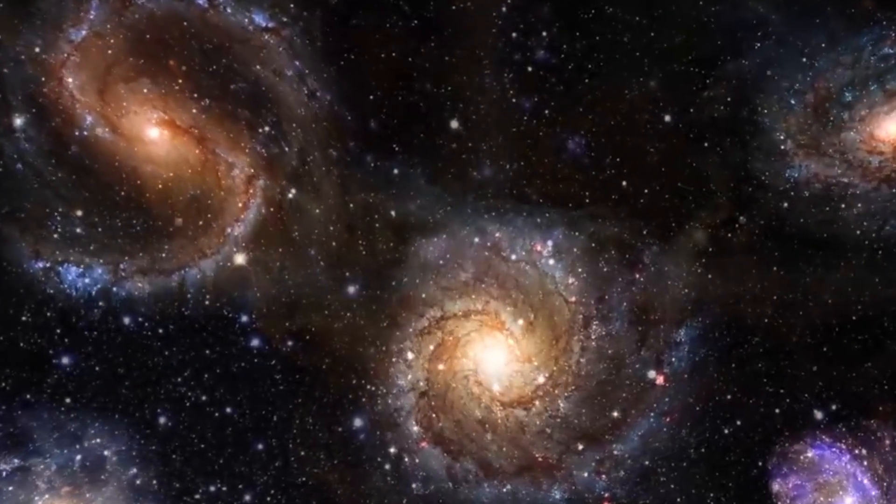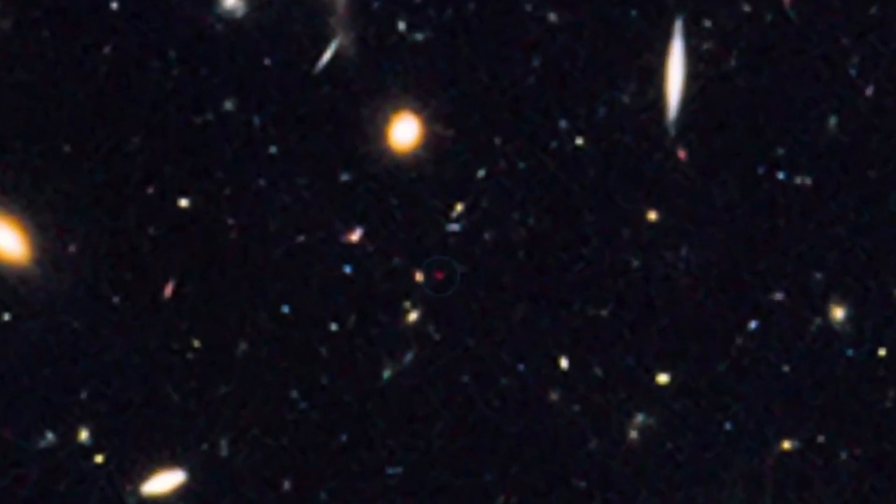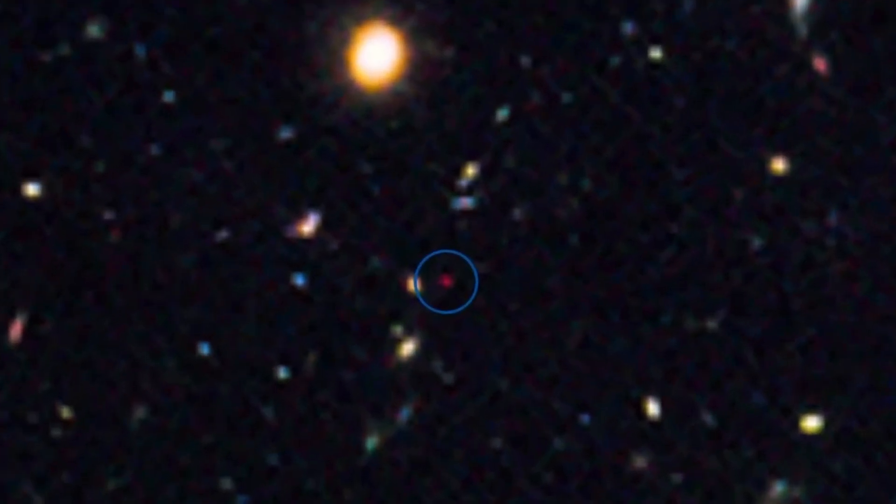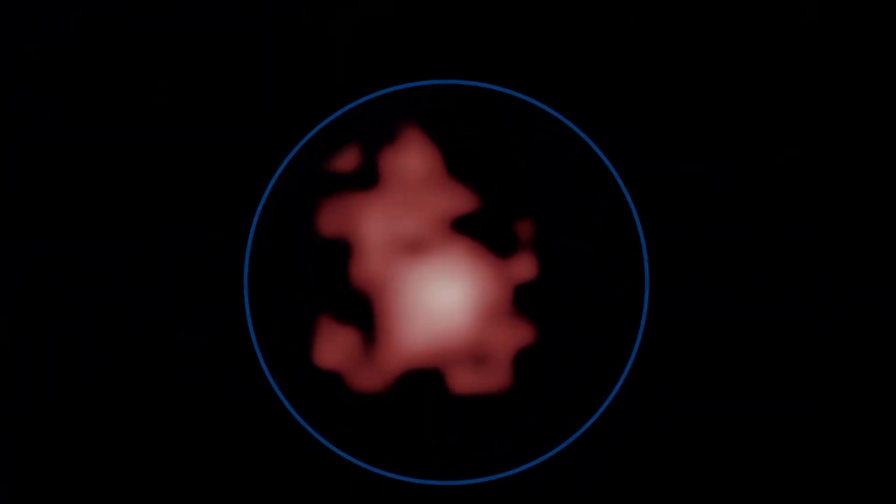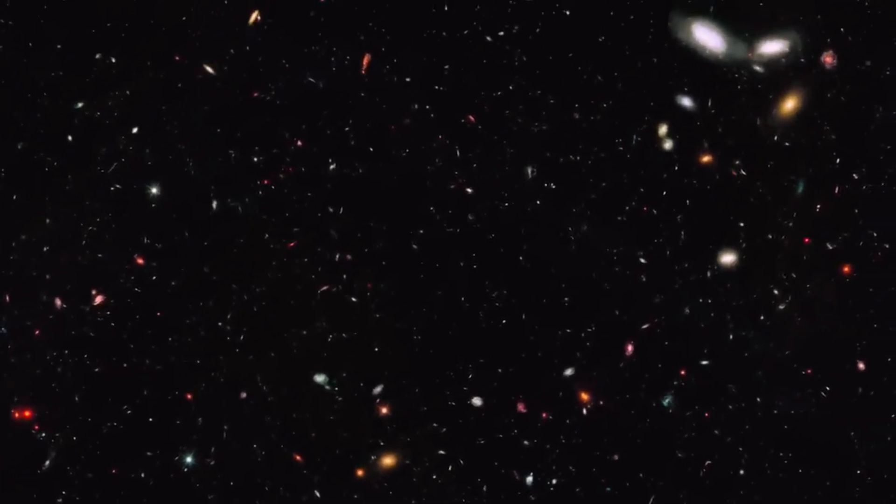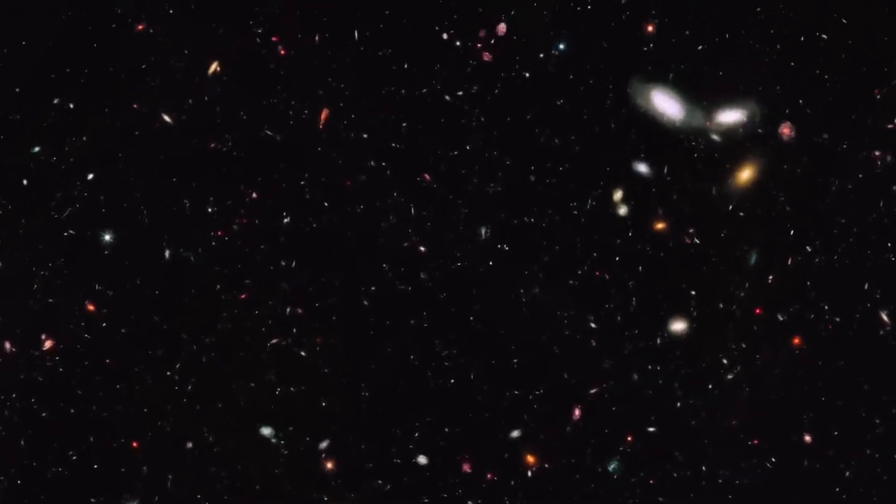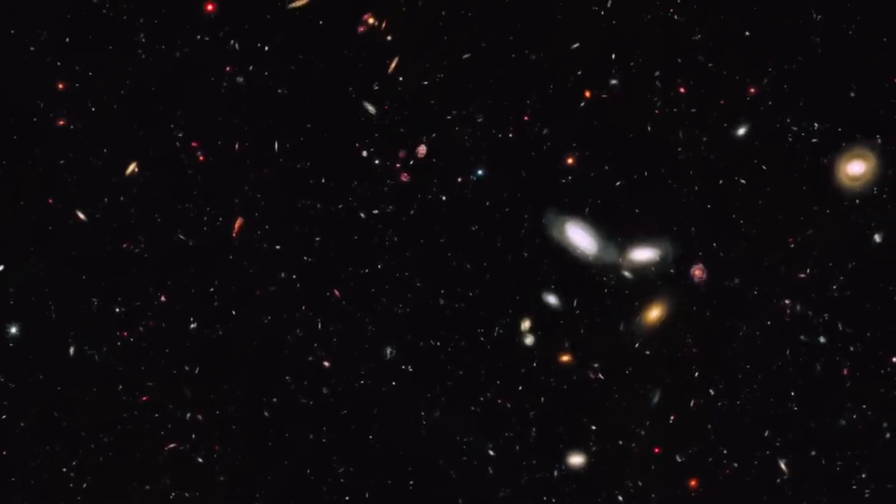This glow could be the direct signature of dark energy, or as some physicists are beginning to whisper, the faint echo of multiple universes interacting at the boundary of ours. Because if the vacuum truly has energy, it might not be unique. There could be other vacua, other universes, each with its own version of space, time, and physics. Webb might have just glimpsed the quiet frontier between them.